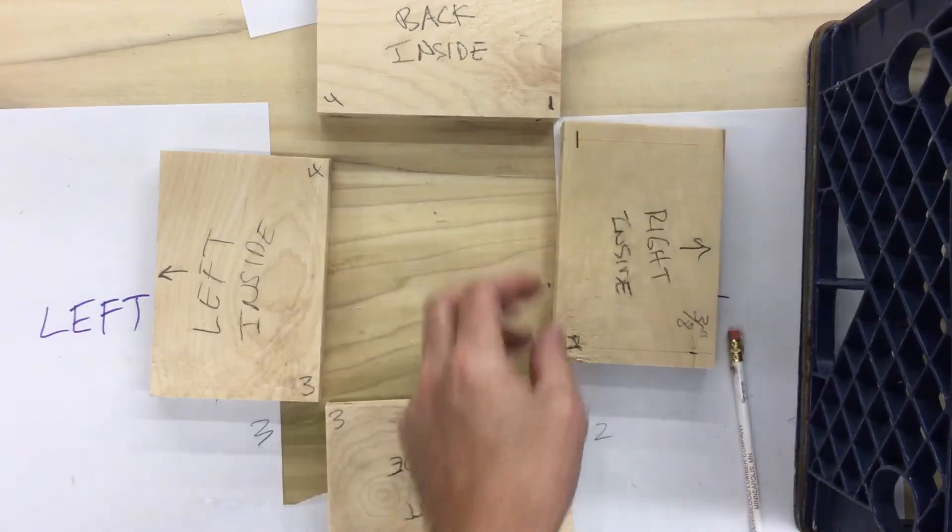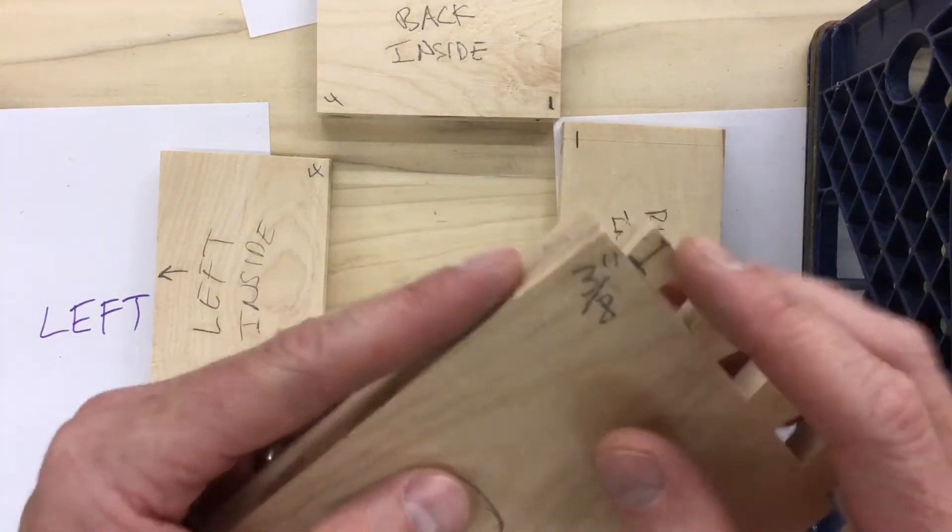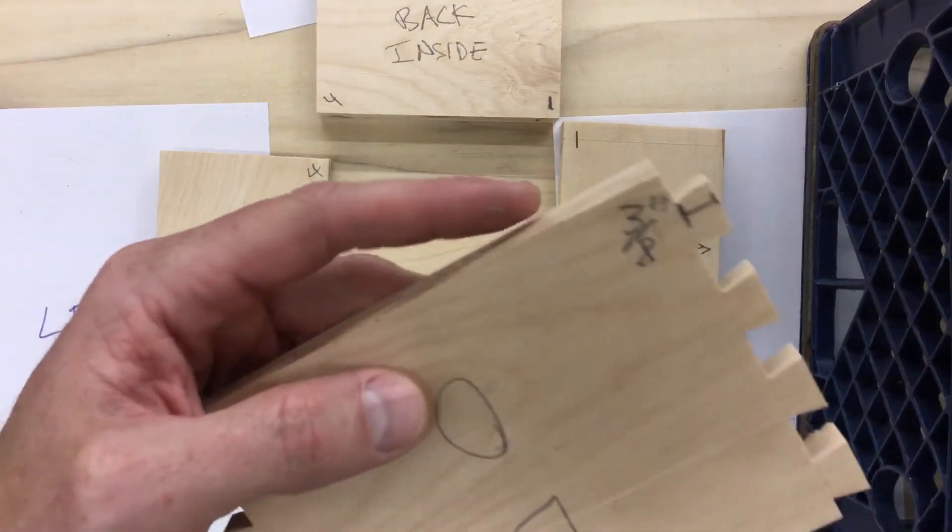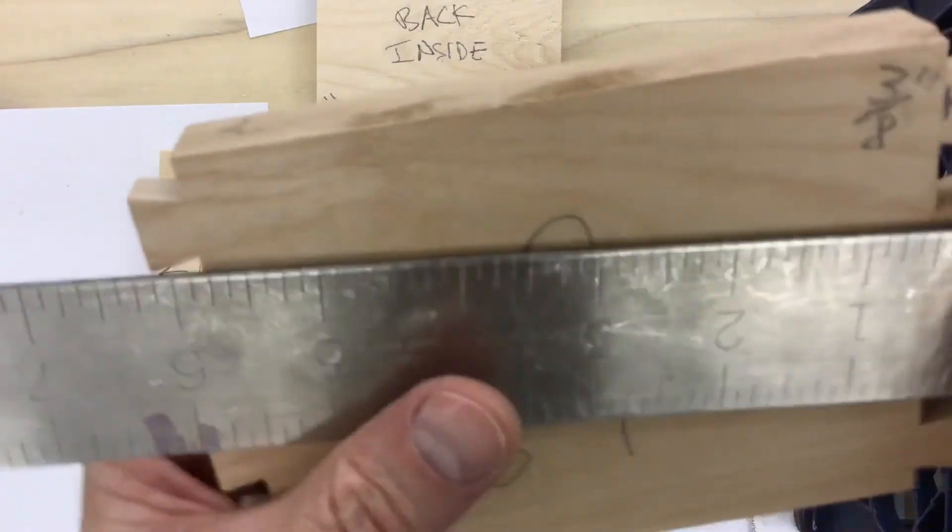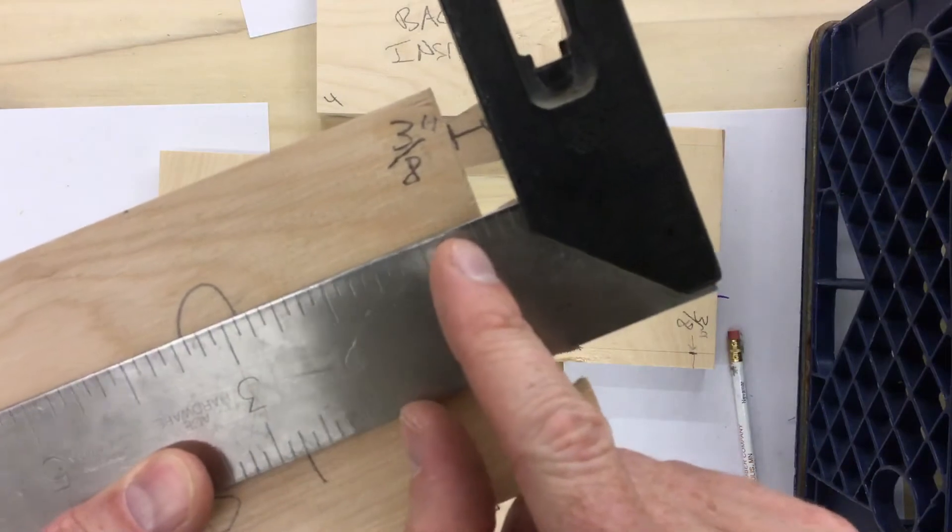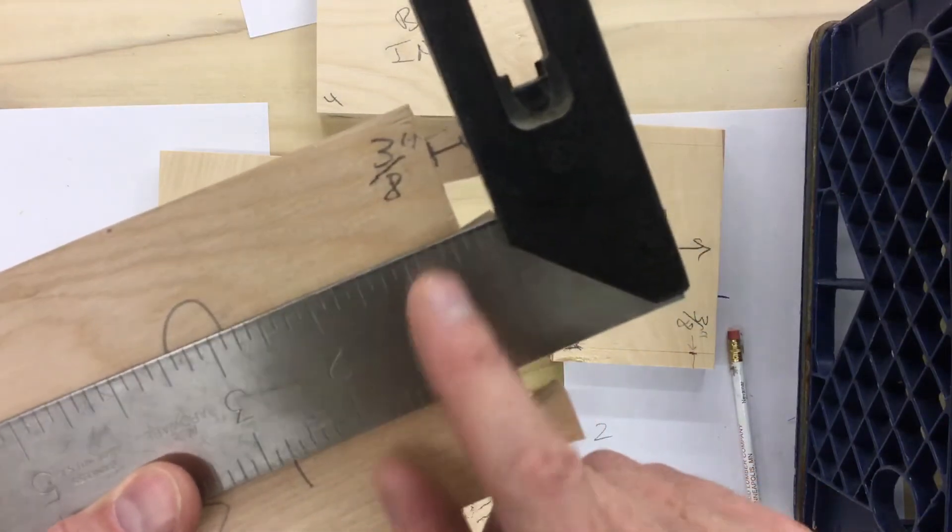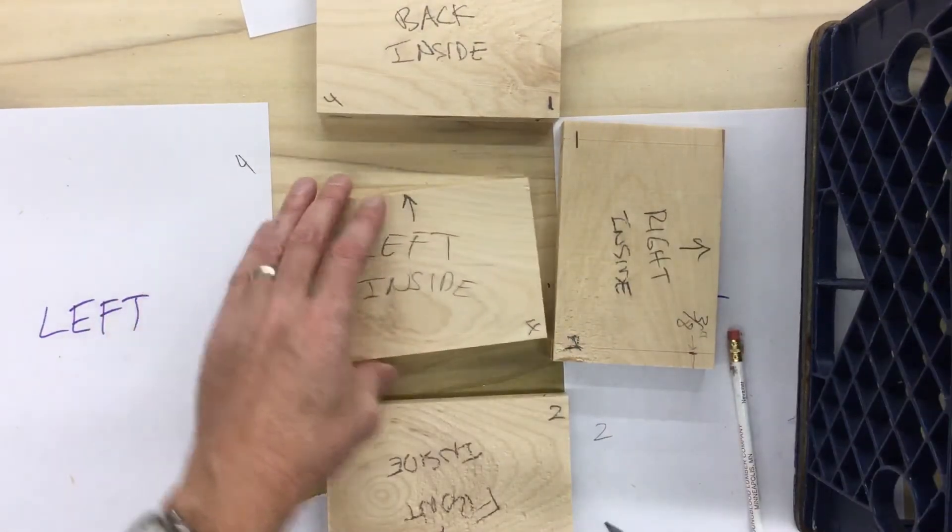So where do we cut is the question. Well, if you look at this one that's already been cut here, if we measure the length of this finger here, which I already did, you can see here it measures to here, which is three-eighths of an inch. I'm going to go over this again in a second when I do the left side here so that you know how to do it.